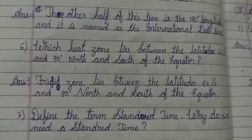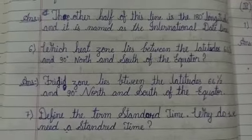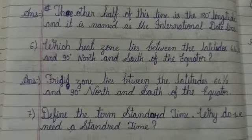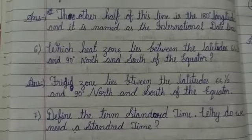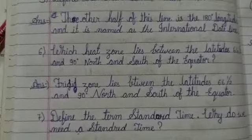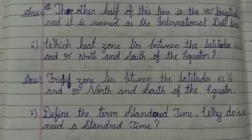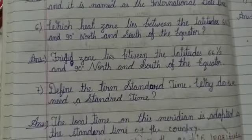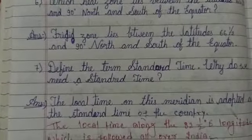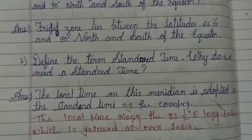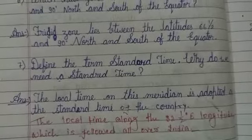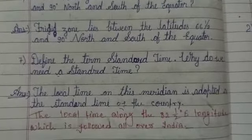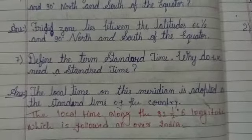Which heat zone lies between latitude 66 and a half degrees and 90 degrees both north and south of the equator? Now define the term standard time — standard time is the local time on the standard meridian adopted as the time for the entire country, which in India is along 82 and a half degrees east longitude.